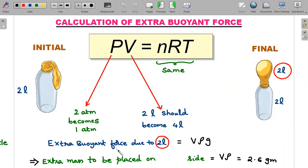I would say the extra buoyant force is now due to this 2 liters of gas which is at 1 atmosphere. Remember, outside gas is also air and it is 1 atmosphere, and inside gas is also air at 1 atmosphere. Therefore, the extra buoyant force is simply the value of the weight of the air displaced here, which is of 2 liters, V·ρ·g that you can write.